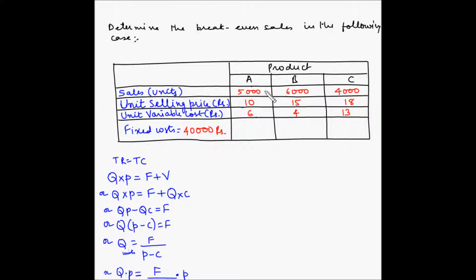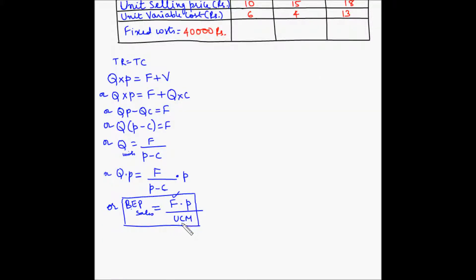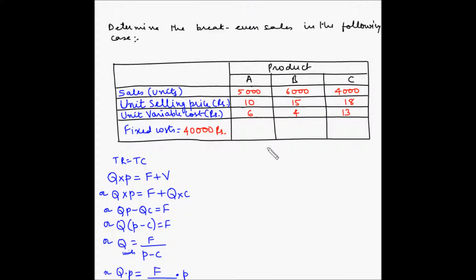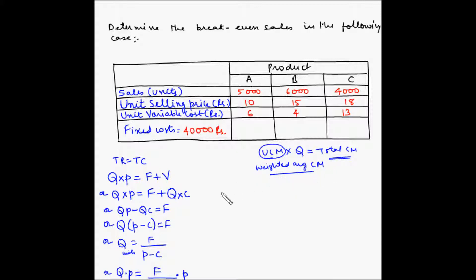In our case we have three products A, B, and C. Each has a different number of units sold, different unit selling price, and different unit variable cost. To find the break-even sales, we know the fixed cost is 40,000 rupees, which is independent of the products being produced. We have to find a unit contribution margin such that when multiplied by the total quantity Q, we get the total contribution margin. This is nothing but the weighted average contribution margin. So let us find out the weighted average contribution margin.